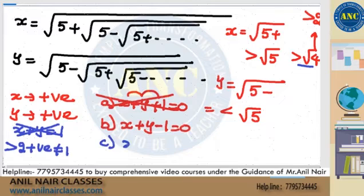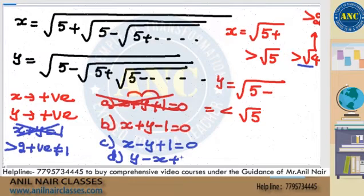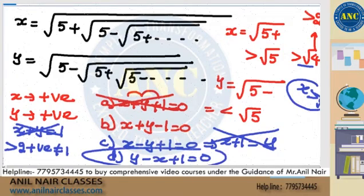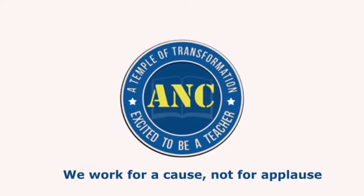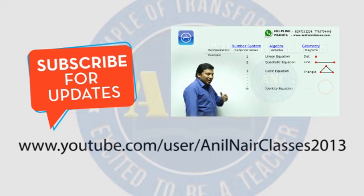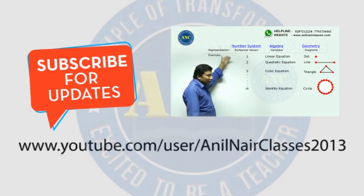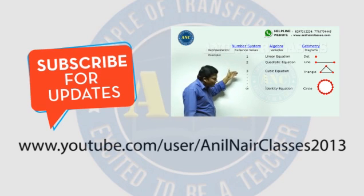So the answer is option D: y minus x plus 1 equivalent to 0. x is greater than y, confirming this relationship. I hope it is clear.